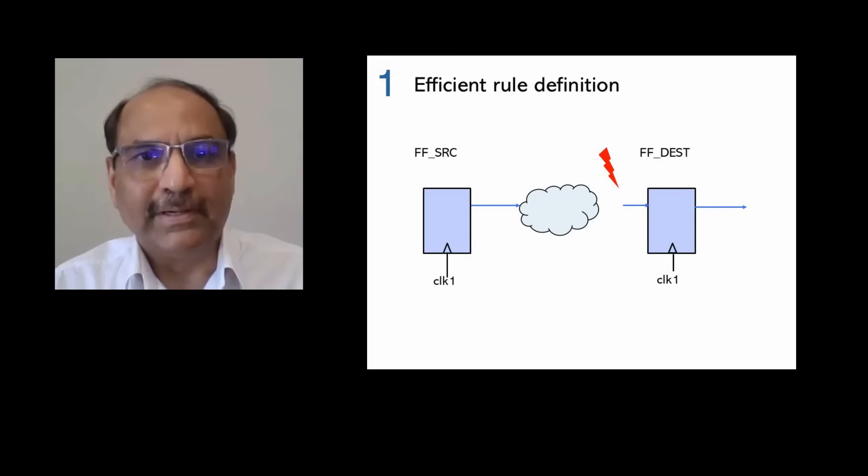First, it is important to define compact rules for various source destination combinations and connection types. For example, checking that connectivity between two flip-flops exists or that it does not exist.